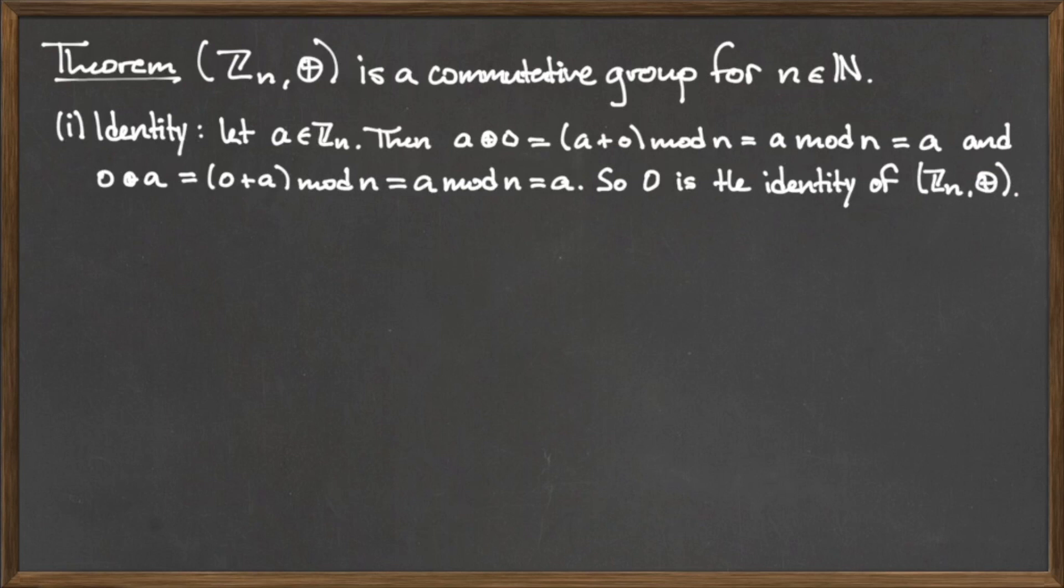For the identity requirement, let a be any element in Z mod n. Then a ⊕ 0 is equal to the quantity a plus 0 mod n, which is equal to a mod n, which is equal to a.